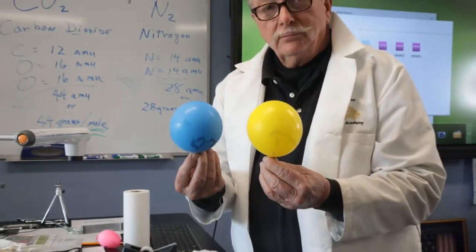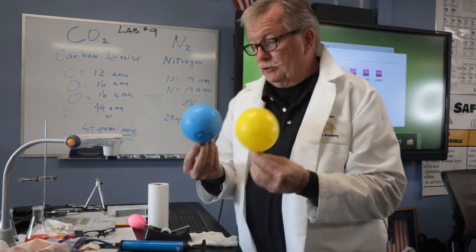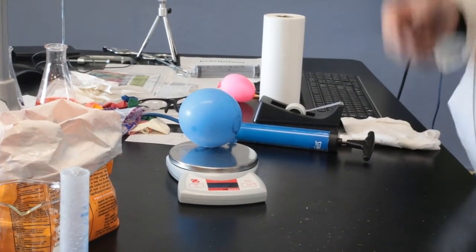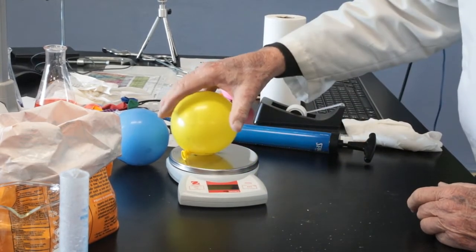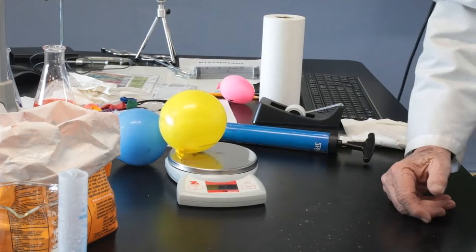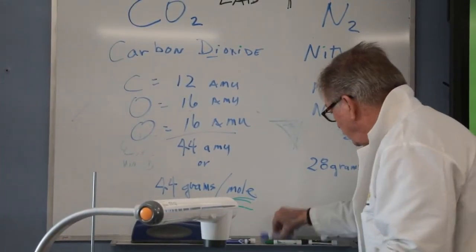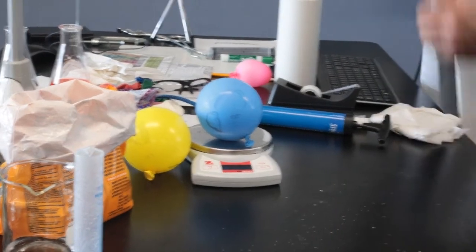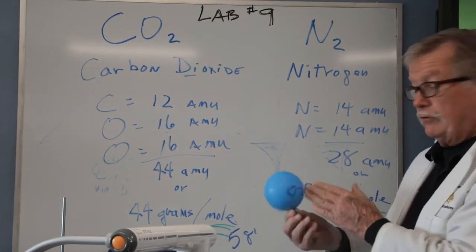So I'm going to put the carbon dioxide on the scale and it weighs 5 grams. If my calculations are right, this should weigh less than five grams. Drum roll, and I put the nitrogen on and it weighs two grams. So according to my little balloon test here, I have two grams in this balloon and the carbon dioxide weighs five grams.